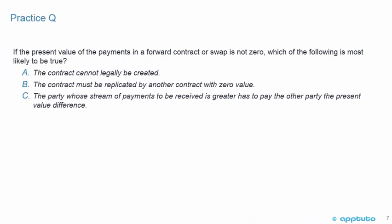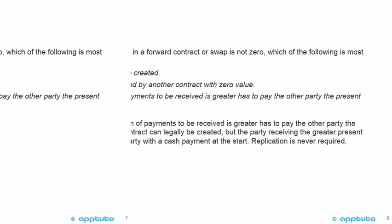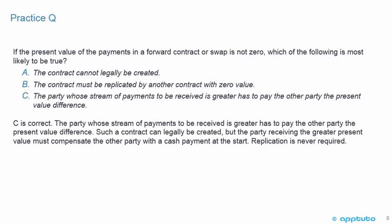One last practice question: if the present value of the payments in a forward contract or swap is not zero, which of the following is most likely to be true? A — the contract cannot legally be created. B — the contract must be replicated by another contract with zero value. Or C — the party whose stream of payments to be received is greater has to pay the other party the present value difference. Such a contract can legally be created, but the party receiving the greater present value must compensate the other party with a cash payment at the start. Replication is never required.